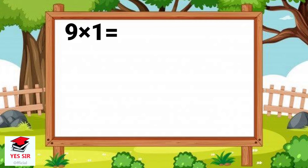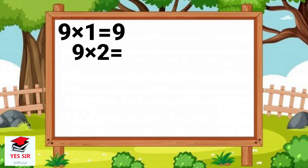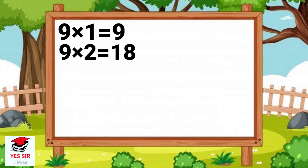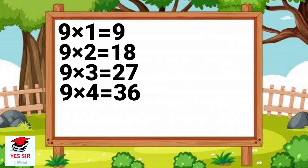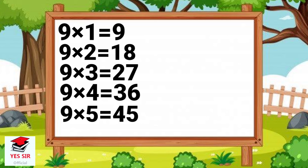Repeat again. 9 and 1 is equal to 9. 9 and 2 is equal to 18. 9 and 3 is equal to 27. 9 and 4 are 36. 9 and 5 are 45.